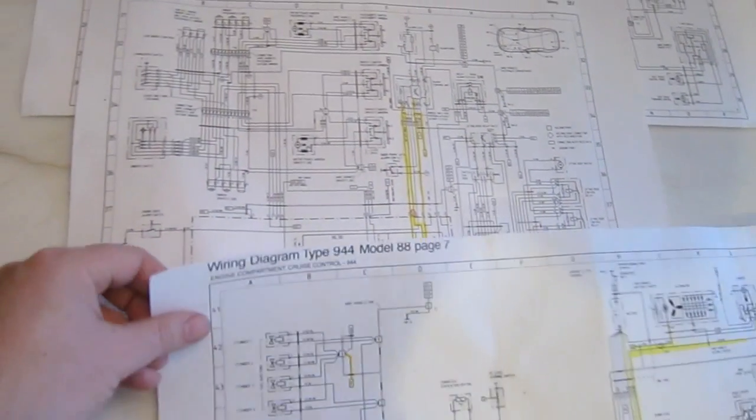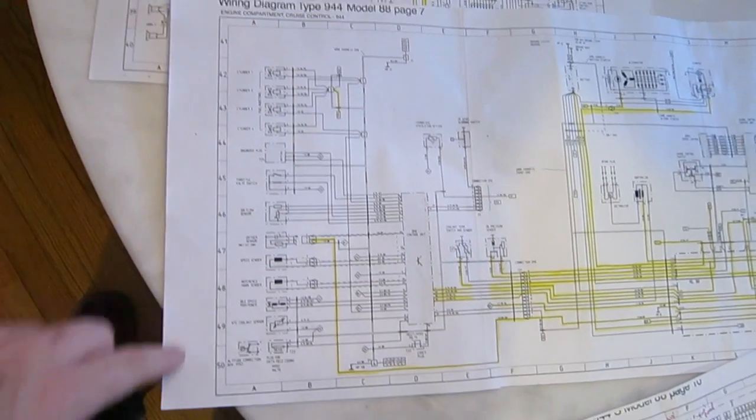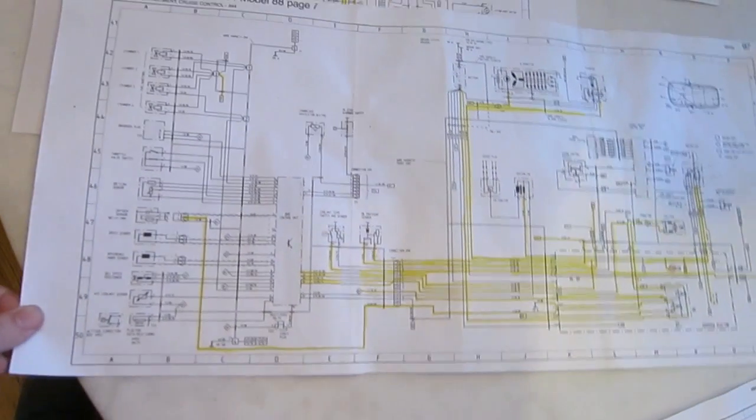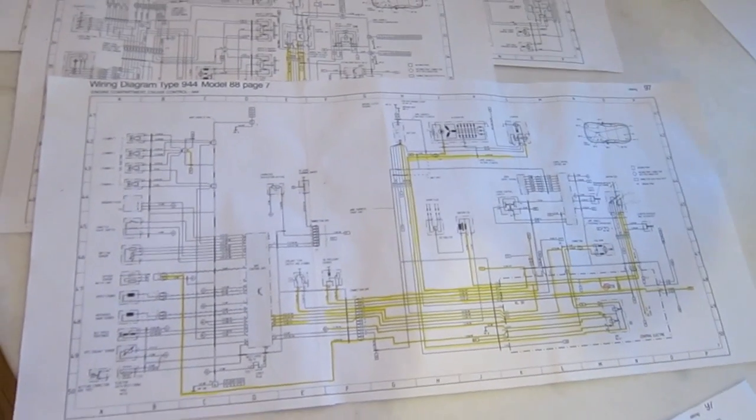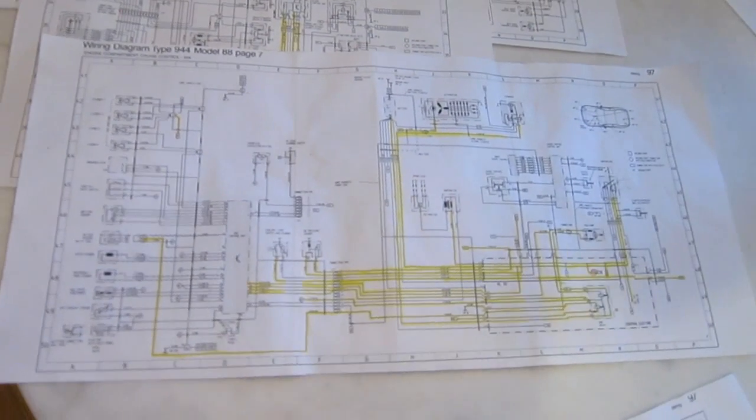And then the second-to-last one here, we get 41 to 50, and this is for the engine compartment and cruise control. Being that I converted my car to a race car, this is primarily the sheet that I use, because this is about all the wiring that's left.